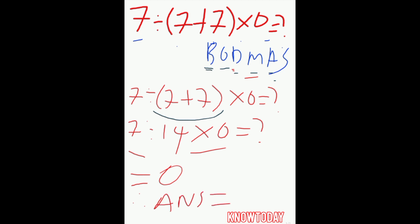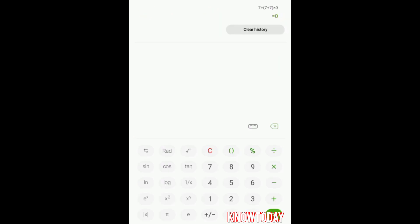Let me prove why the answer is 0. Let's use this scientific calculator and test if it will give us 0. So the quiz is 7 divided by bracket 7 plus 7, close bracket, times 0 equals what? 0!